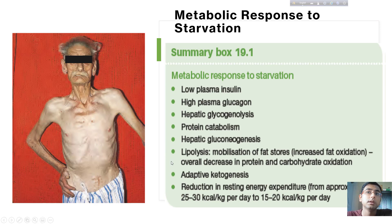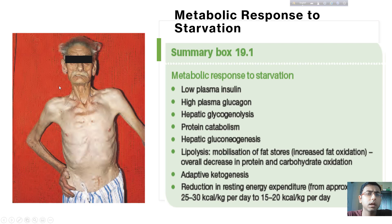Hepatic gluconeogenesis means carbohydrate production from non-carbohydrate precursors. This patient has little dietary carbohydrate but has non-carbohydrate precursors like amino acids and fatty acids. Some metabolic pathways can convert these amino acids or fatty acids into glucose — that is called hepatic gluconeogenesis.